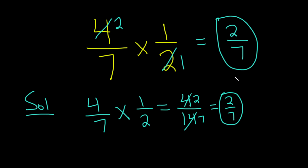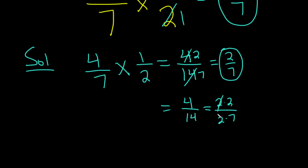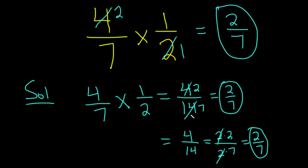Another way to show the work is when you get here to 4 over 14, you can write this as 2 times 2 over 2 times 7, and then the 2's cancel, and you're left with 2 over 7. That might be a better way to do it. It's just another way. It's important to be aware of all of the ways.